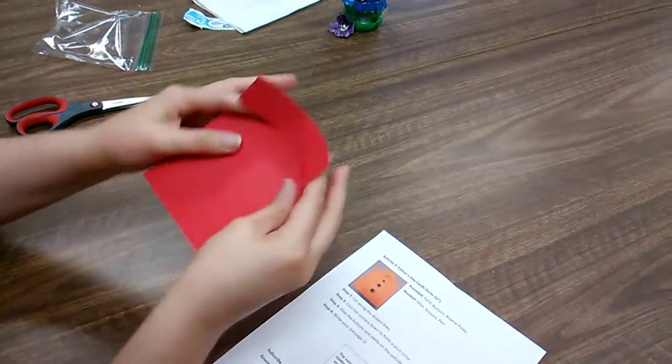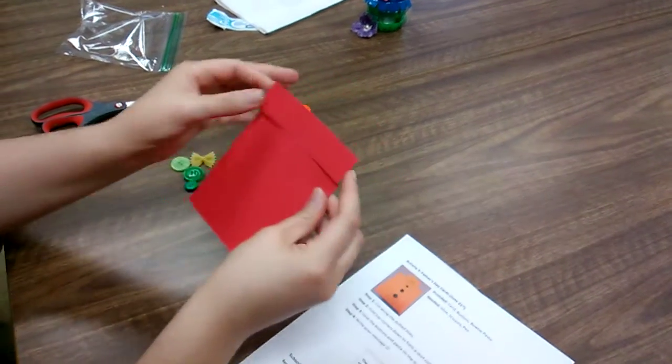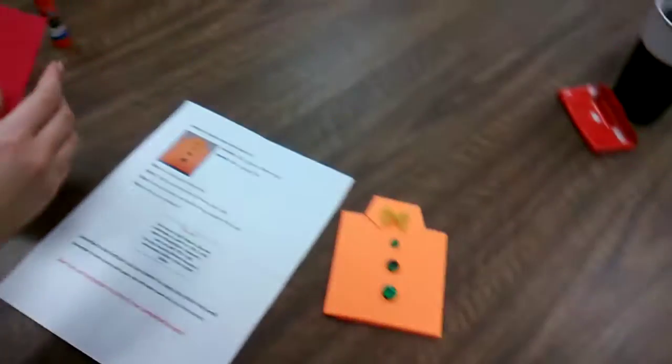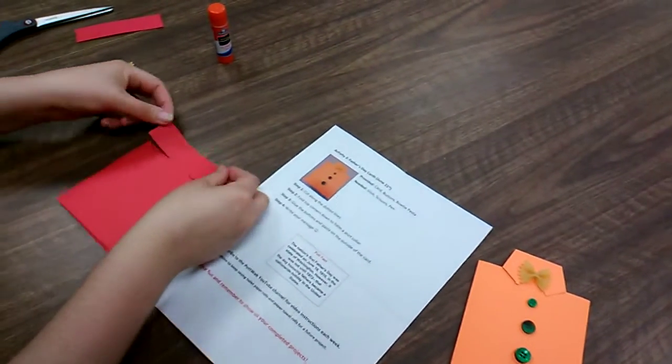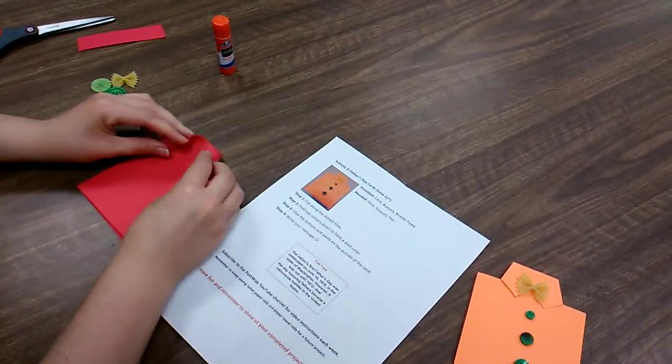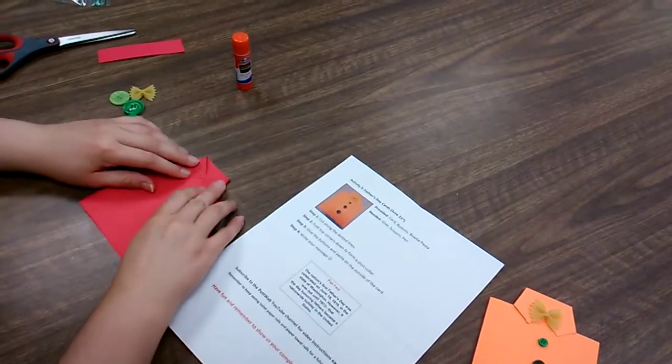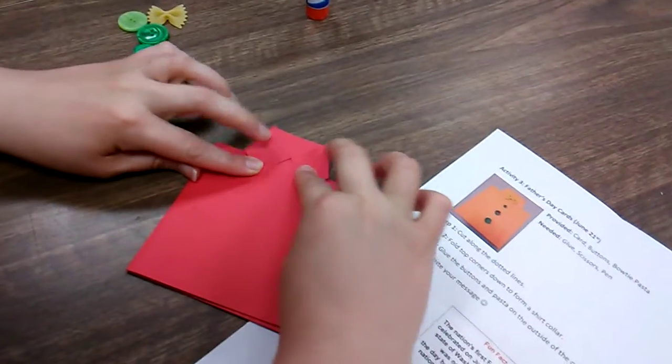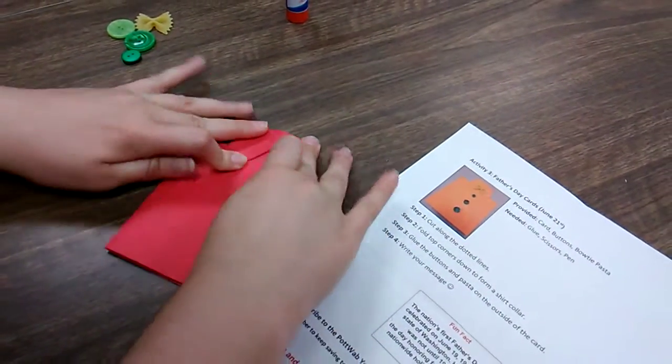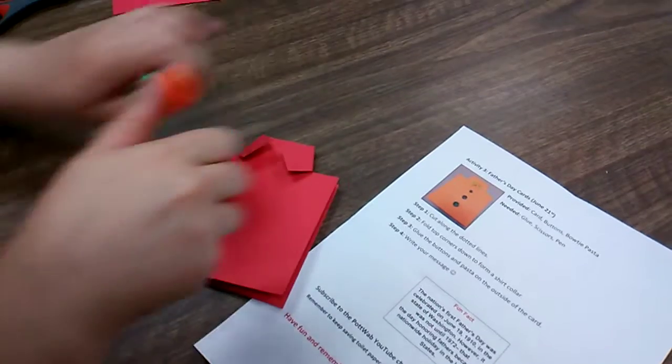So you're left with this shape here. You're going to turn this into the collar. So you're just going to take these top corners and fold them down to the center, like that. And then go ahead and just glue them down.